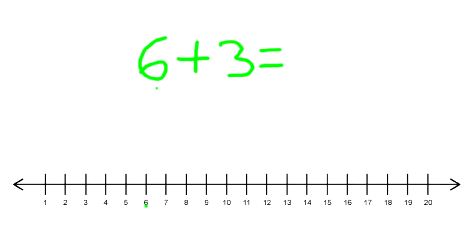And you want to hop three times like a frog. You go one, two, three. And so what number did we end up on? We ended up on the number 9. So 6 plus 3 equals 9. Alright.